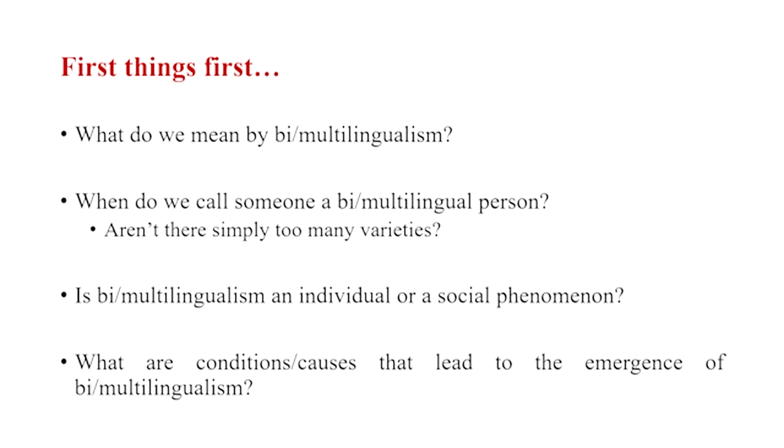What are the conditions and causes that lead to the emergence of bilingualism? How does bilingualism come about? Is it that parents speak both Hindi and English and that is why a child learns both? Or is it that going to an English-medium school leads to learning English? Or are there broader phenomena at the societal or national scale that make someone bilingual? These questions are central to understanding what bilingualism is all about.